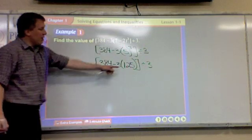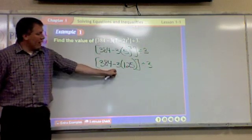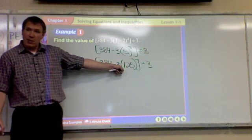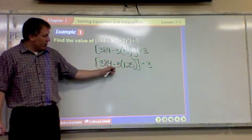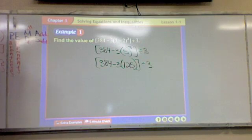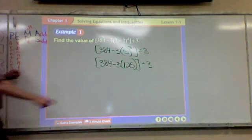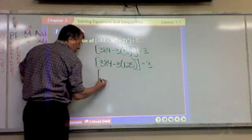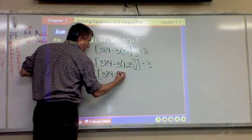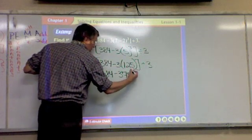Okay, inside the brackets here I have subtraction. So subtraction or multiplication, which comes first? Multiplication. So what's 3 times 125? 375.